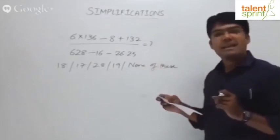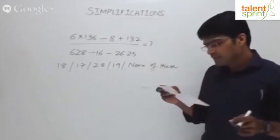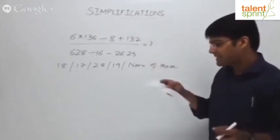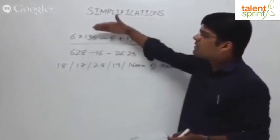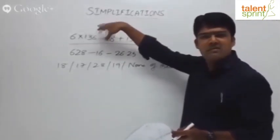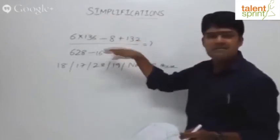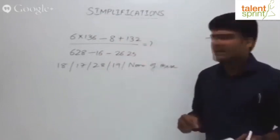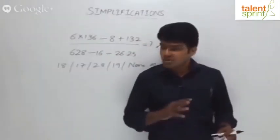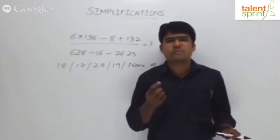The problem is 6 into 136 divided by 8 plus 132, all divided by 628 divided by 16 minus 26.25. It's a complicated numerator with simplification within it and a similar denominator. Simplify the numerator and denominator respectively, then go for the division part. Most questions on simplifications, though they appear complicated, depend on your speed math ability.